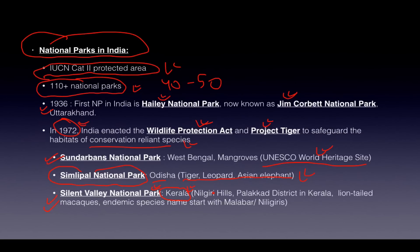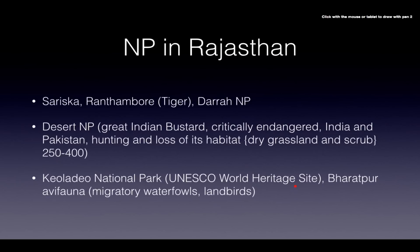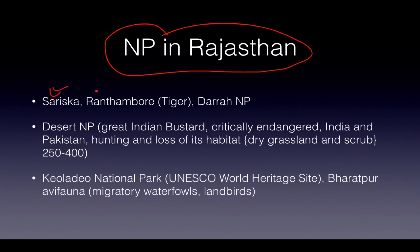Silent Valley National Park is in Kerala, located in the Nilgiri Hills in the Palakkad district. The famous species here is the lion-tailed macaque, and there are many endemic species — if a name contains Malabar or Nilgiri, it is endemic to this region of the Western Ghats. For Rajasthan: Sariska, Ranthambore, and Darrha national parks are famous for tigers. Desert National Park is famous for the Great Indian Bustard, which is not afraid of humans, making it easily killed. Its numbers are only 250 to 400, making it critically endangered, found in the Thar desert region of Rajasthan, Gujarat, and adjoining Pakistan.